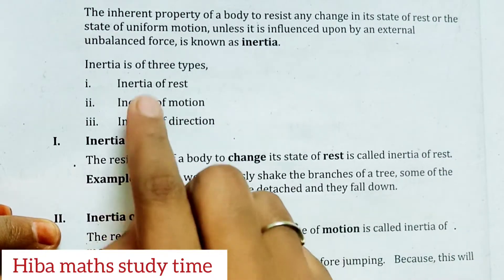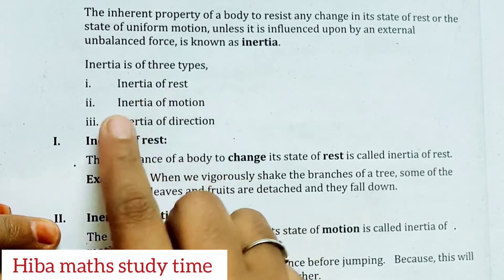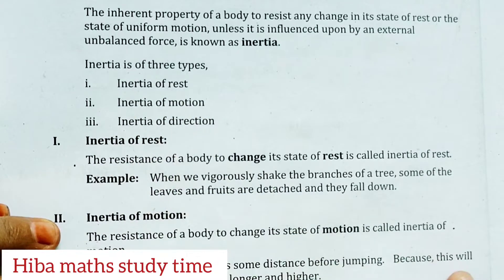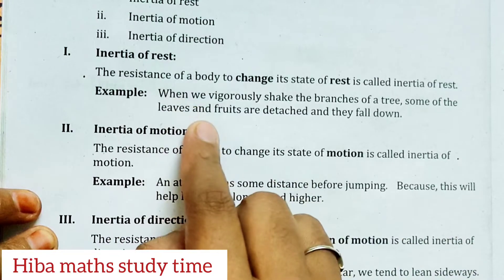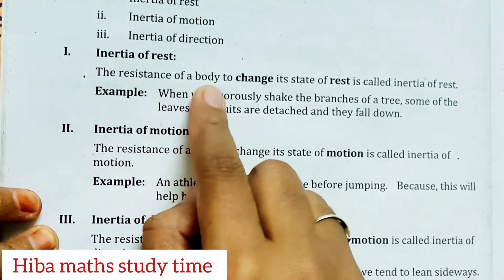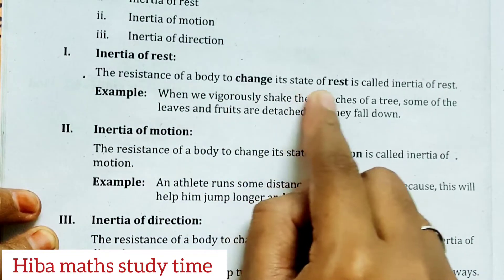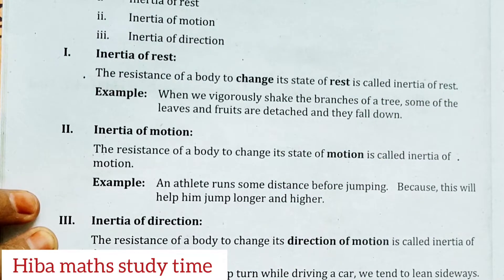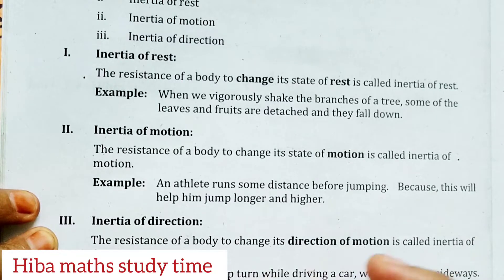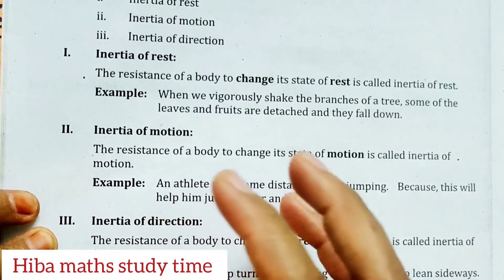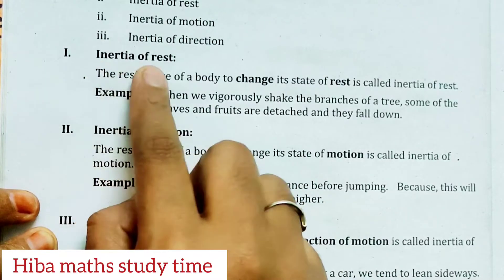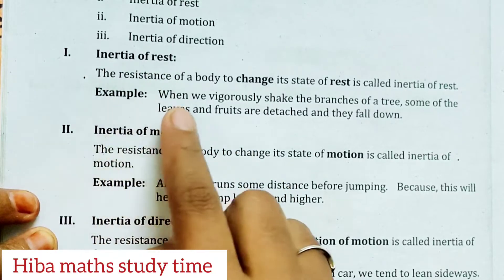The three types of inertia are: inertia of rest, inertia of motion, and inertia of direction. Inertia of rest: the resistance of a body to change its state of rest is called inertia of rest. An object at rest resists an external unbalanced force — that resistance is called inertia of rest.